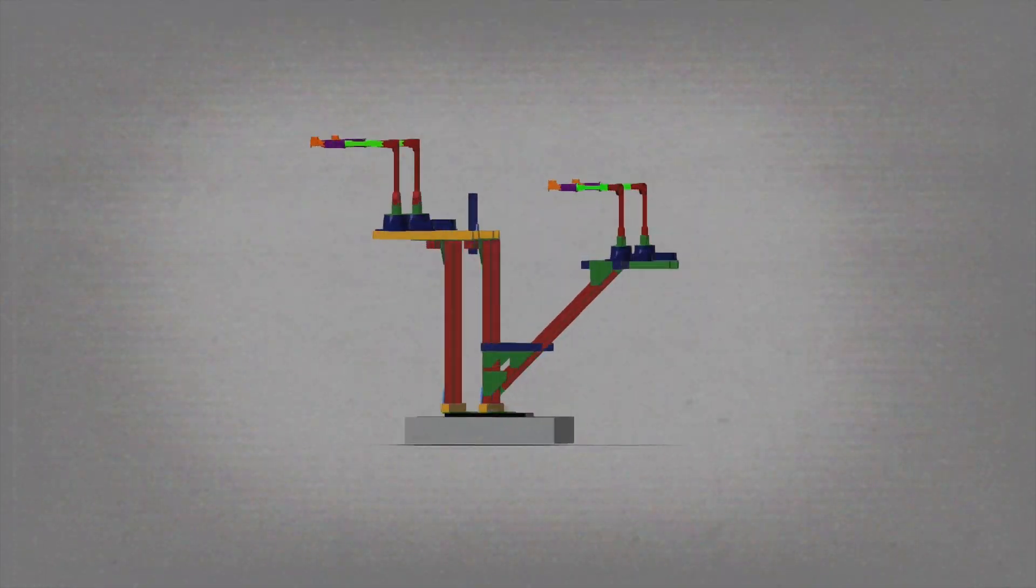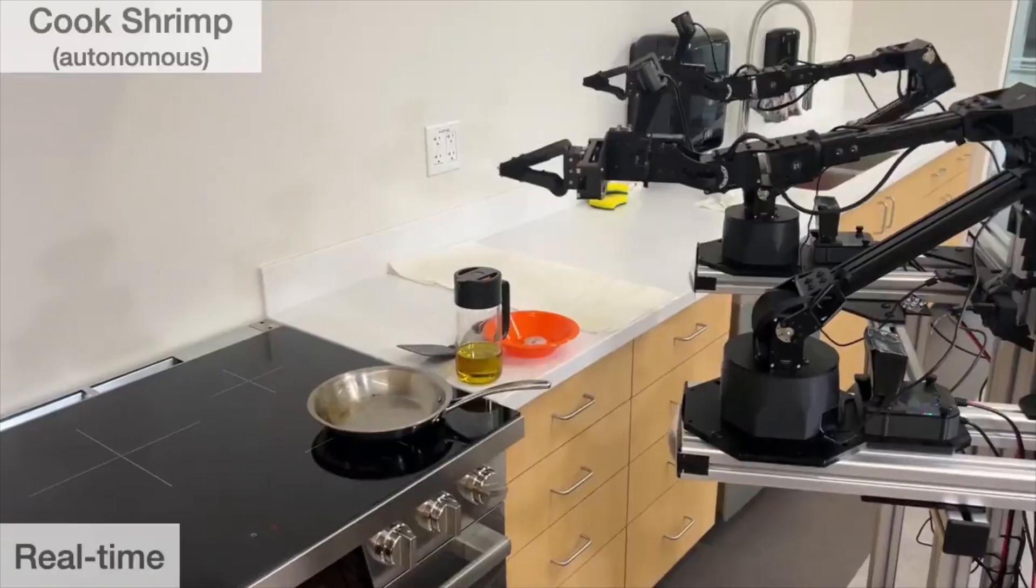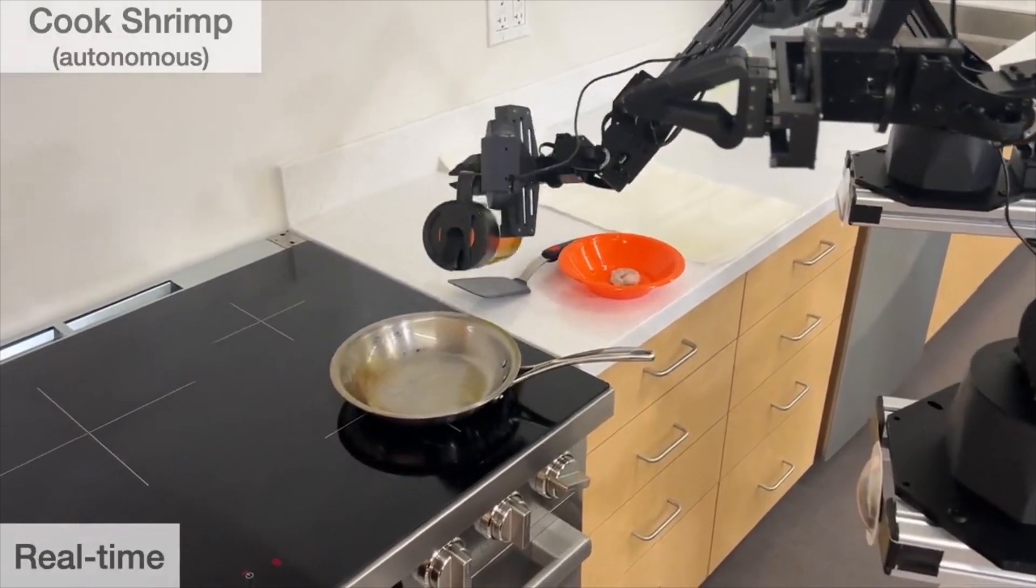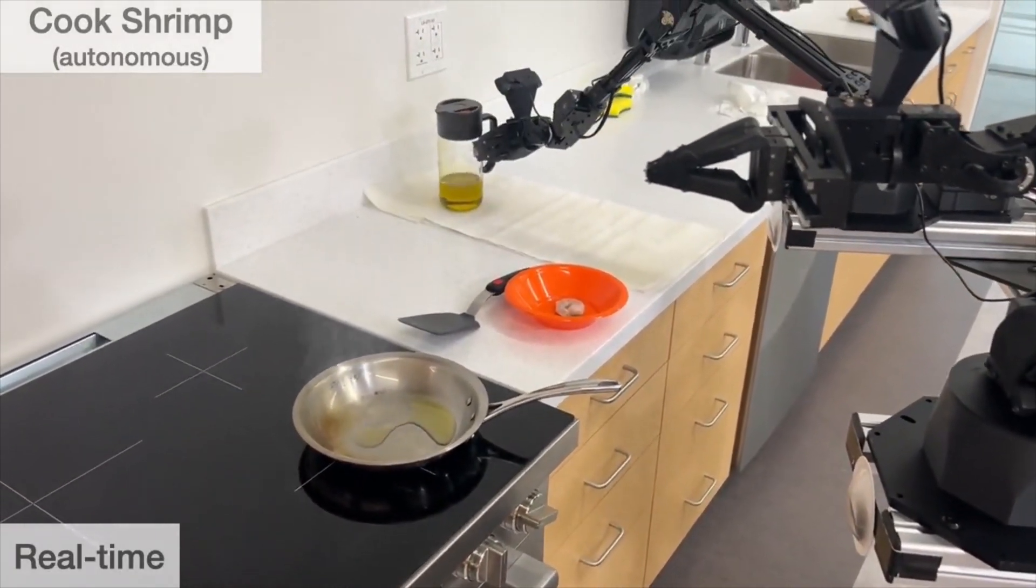The whole-body teleoperation interface allows it to control and coordinate all of its parts efficiently. This frame allows the Mobile Aloha to navigate kitchens with ease, effortlessly reaching for ingredients and tools in a manner that mirrors human motion.